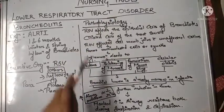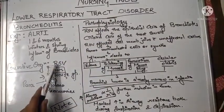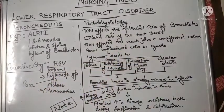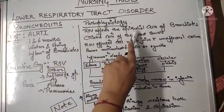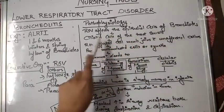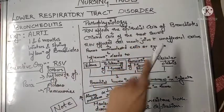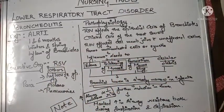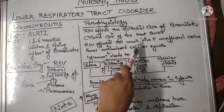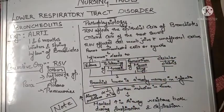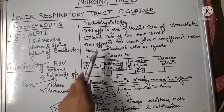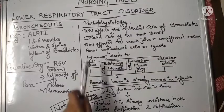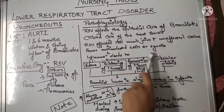In the pathophysiology, RSV — Respiratory Syncytial Virus — affects the epithelial cells of the bronchioles. These are ciliated cells that get swollen up due to the virus. The membrane of these affected ciliated cells then joins with unaffected cells, forming multi-nucleated cells also known as syncytia.